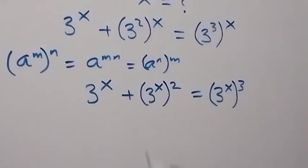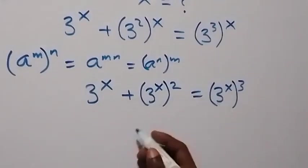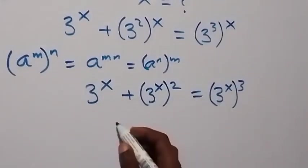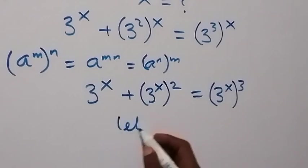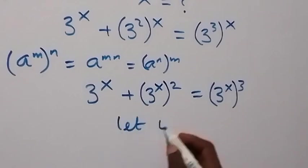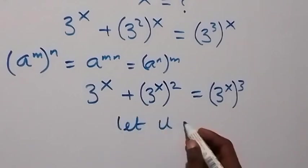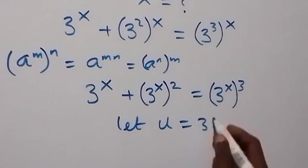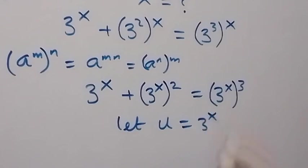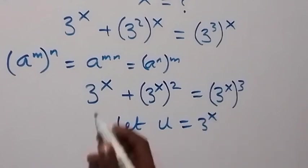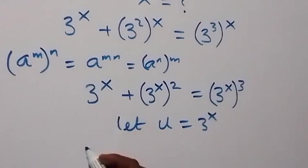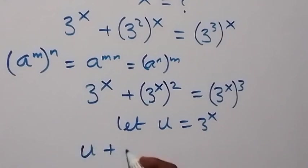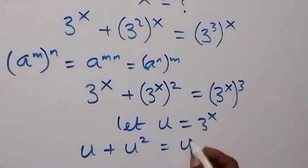Now let's use a letter u to represent 3 raised to power x. Let u equal 3 raised to power x. Then we can rewrite the equation as u plus u squared equals u cubed.